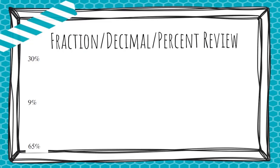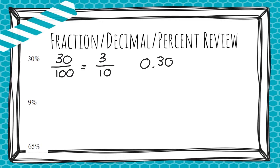Let's first look at the relationship between fractions, decimals, and percent. The first one we have is 30%. If I wanted to write this as a fraction, I would write 30 out of 100, because every percent is out of 100. This could be simplified down to 3 tenths. If I wanted to write this as a decimal, I would write it as 30 hundredths or 3 tenths. So there are several different ways to write 30%. 9% is 9 out of 100, which cannot be simplified, and the decimal version of this would be 0.09.